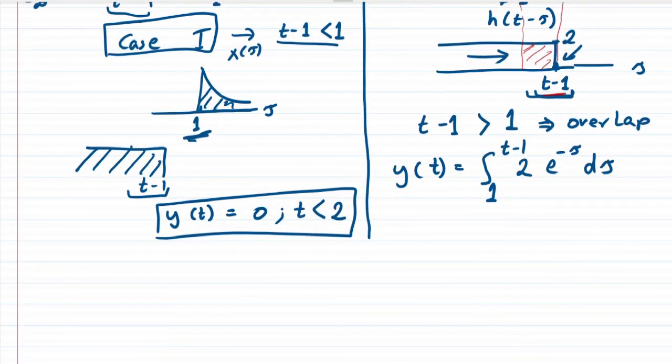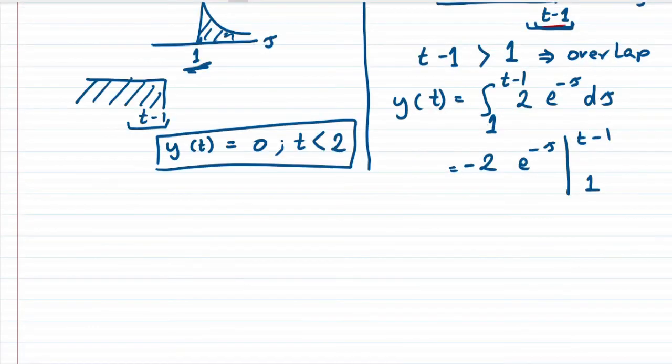We would have minus 2e to the power minus τ evaluated from 1 to t minus 1, which is minus 2e to the power minus (t-1) minus (-1). You can simplify it further if you like.